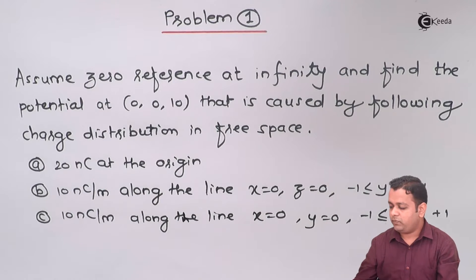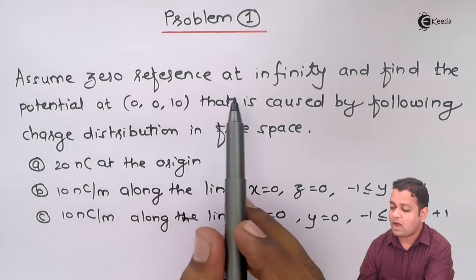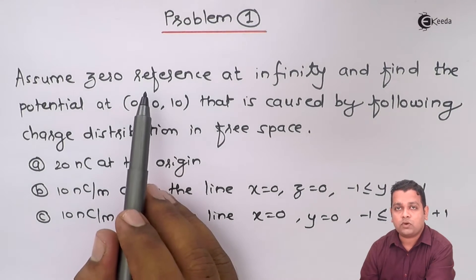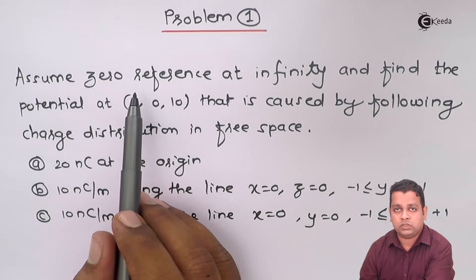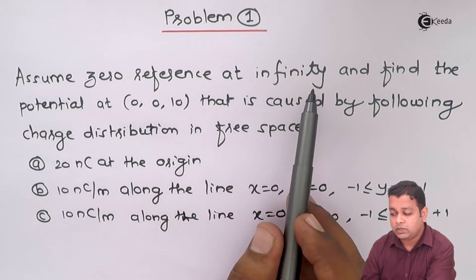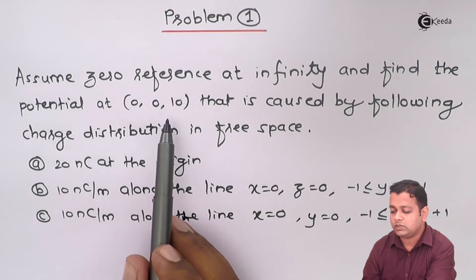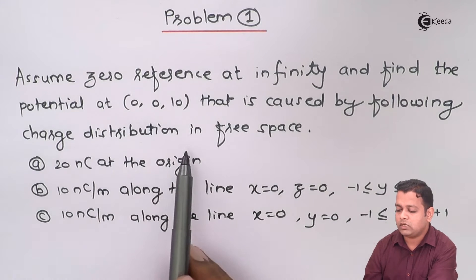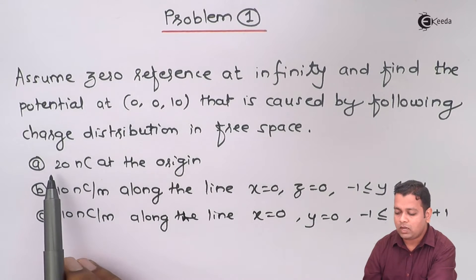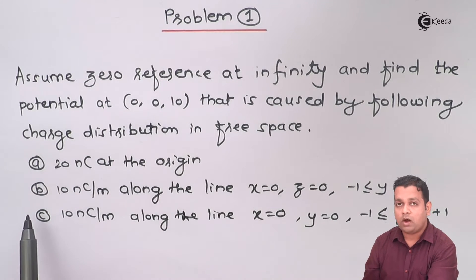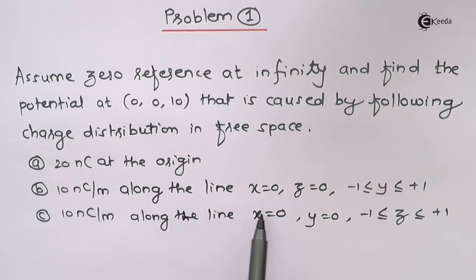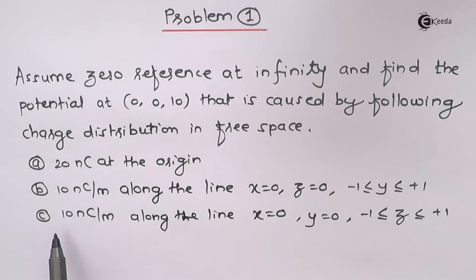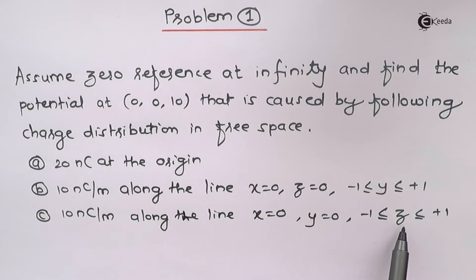The problem statement is: assume zero reference at infinity. We consider zero reference means the potential at such a point which is equal to zero. Assuming zero reference at infinity and finding the potential at (0, 0, 10) caused by the following charge distributions in free space. For part A, we have 20 nanocoulombs of charge at the origin. For part B, we have 10 nanocoulombs per meter along the line x=0, z=0, y ranging from minus one to plus one. In part C, we have a line charge distribution of 10 nanocoulombs per meter along x=0, y=0, z ranging from minus one to plus one.